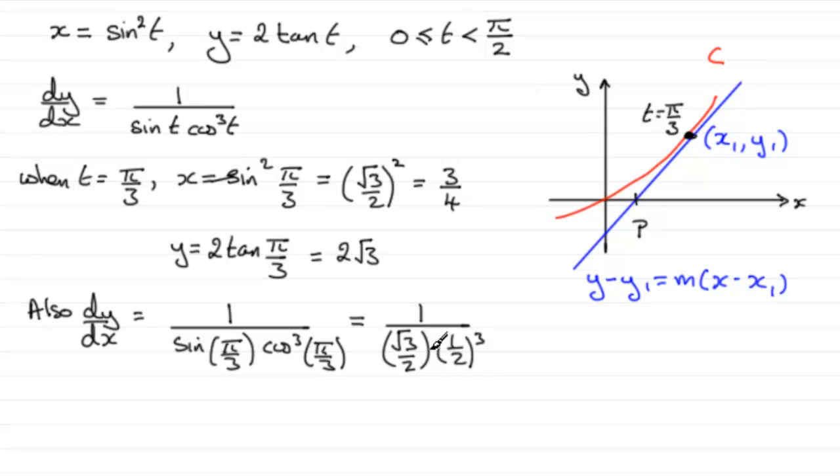And so if you work that out, it comes to 16/√3. If you do this straight out on your calculator, the chances are your calculator will rationalize this, and you'll find that you get 16√3/3 instead.